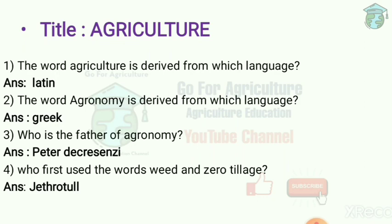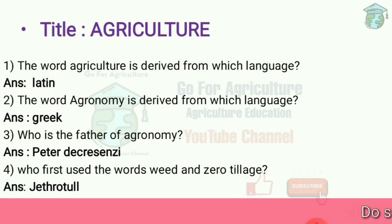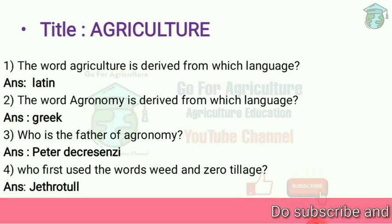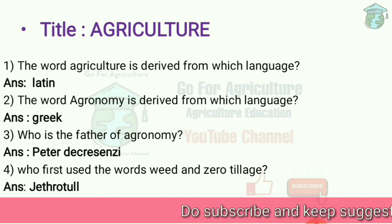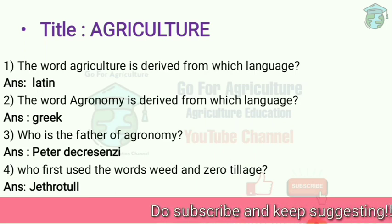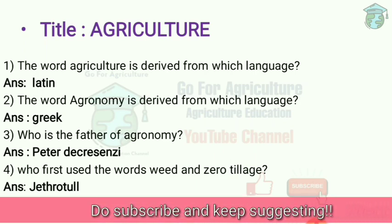Peter de Crescenzi is the father of agronomy. He has written a book called Opus Ruralium Commodorum. Who first used the words 'weed' and 'zero tillage'? Jethro Tull. Horse-Hoeing Husbandry was the book written by him, and he developed the horse-drawn cultivator.